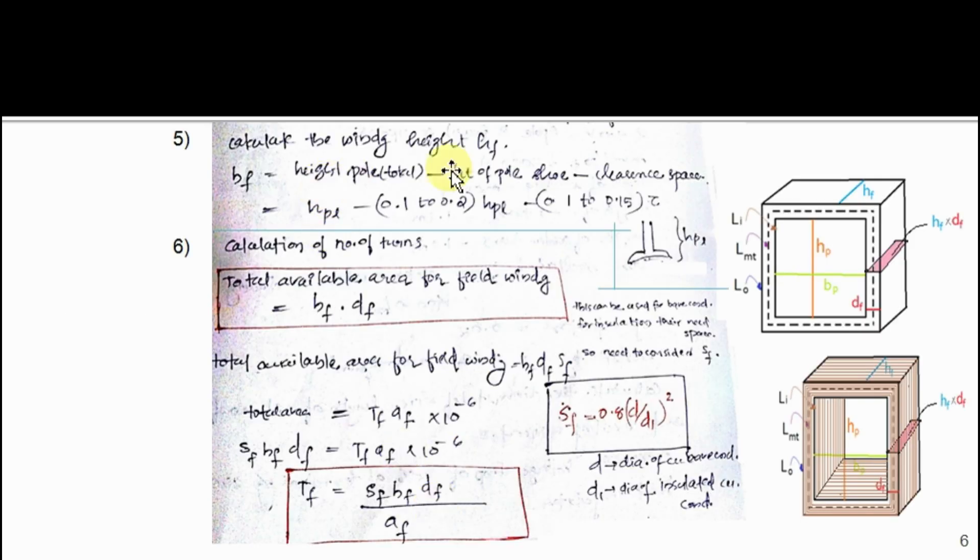Calculate the winding height hf. It is the total height of pole minus height of pole shoe minus some clearance space. Taking total height of pole as hpl, height of pole shoe is 0.1 to 0.2 times of it, and clearance space is 0.1 to 0.15 of hpl.